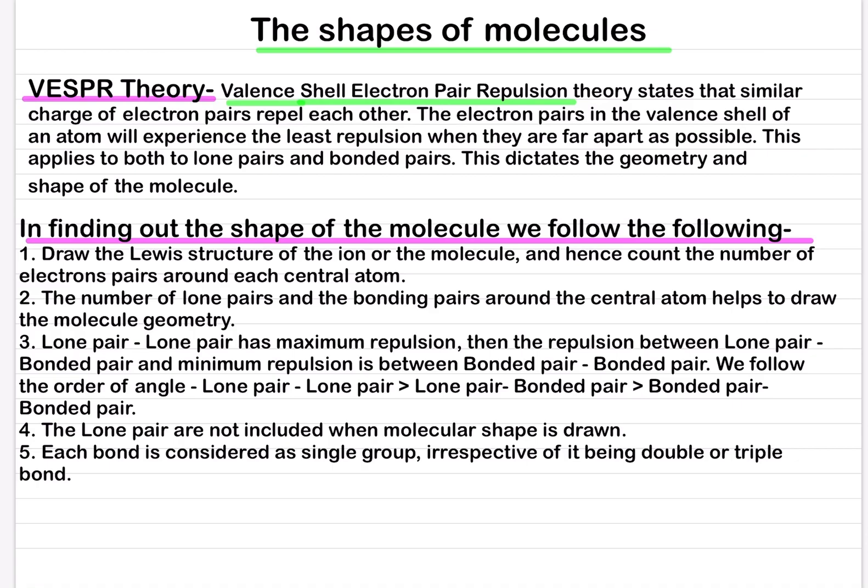The lone pairs are not included when molecular shape is drawn. Each bond is considered as single group irrespective of it being double or triple bond. Because all the electrons have the same negative charge they repel each other when they are close together. So a pair of electrons in the bond surrounding the central atom in a molecule will repel other electron pairs. This repulsion forces the pairs of electrons apart until the repulsive forces are minimized.